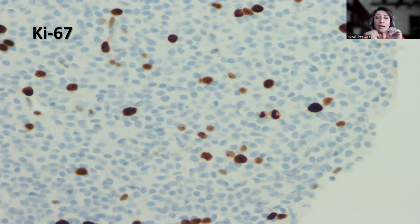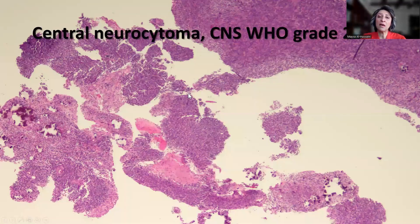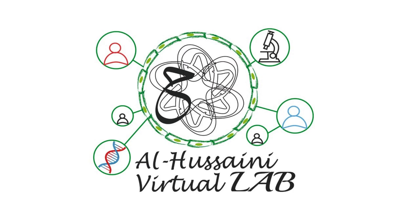What implications would this have on patient management? Patients with atypical neurocytoma — the WHO does not use the term 'atypical', but you can write it in the note — showing atypical neurocytoma features are entitled to receive radiotherapy in order to decrease the chances of recurrence. To sum up, the final diagnosis of this case was central neurocytoma, CNS WHO Grade 2. I hope you find this tip useful in your daily practice. Thank you.